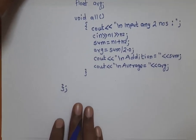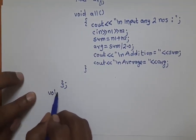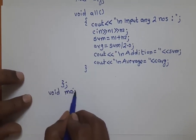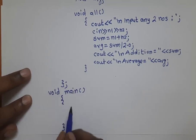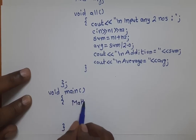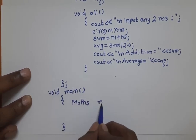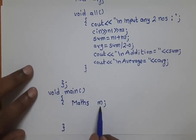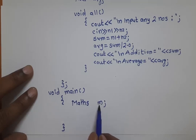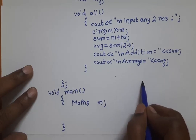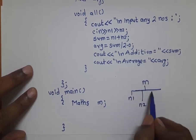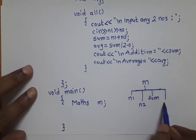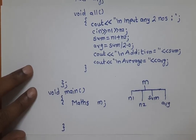After the class, we write the main program: void main() with open and close curly brackets. From the class 'Maths' we create object m in the main program — so m is the object created from class Maths. Whenever this statement is executed, the compiler creates one object m and within it creates member variables n1, n2, sum, and avg.